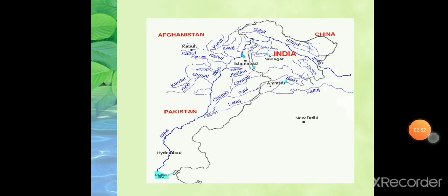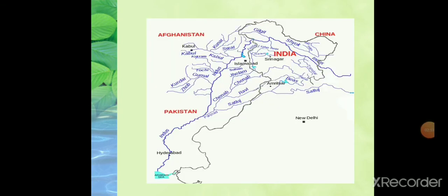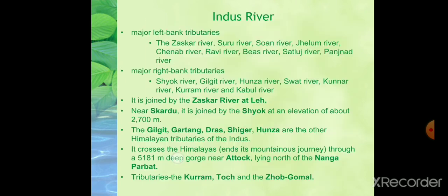It is better to have a map side by side to view all the places, rivers, and tributaries. Major left bank tributaries are: Zaskar, Suru, Soan, Jhelum, Chenab, Ravi, Beas, Sutlej, and Panchnad river. Major right bank tributaries are: Shyok, Gilgit, Hunza, Swat, Kunar, Kurram, and Kabul river.